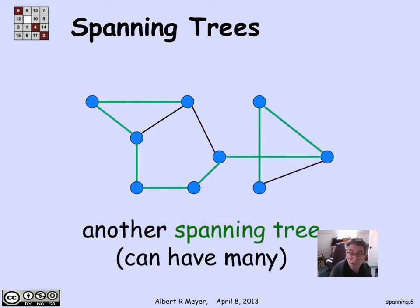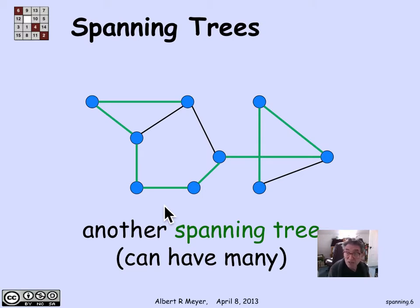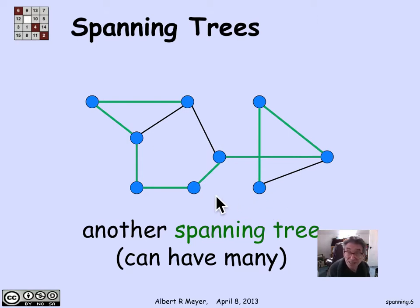There are lots of spanning trees. Here's another one, this time with green edges. I'm using only edges from the original graph, leaving out three different ones and using a different set of edges to form the tree. It has no cycles and it spans the graph because every vertex in the graph is part of it, and of course it's connected since it's a tree.